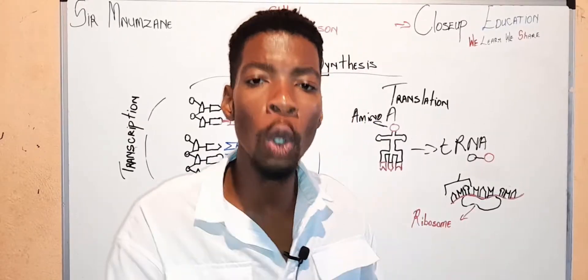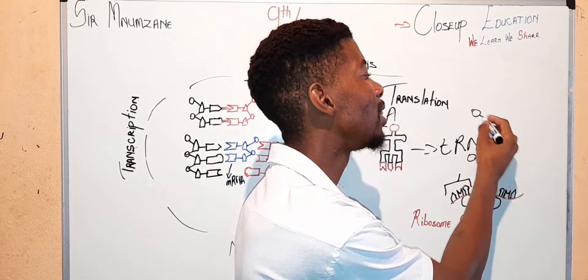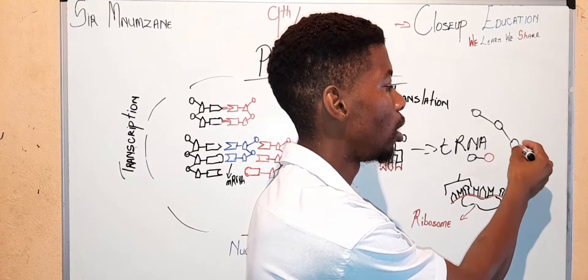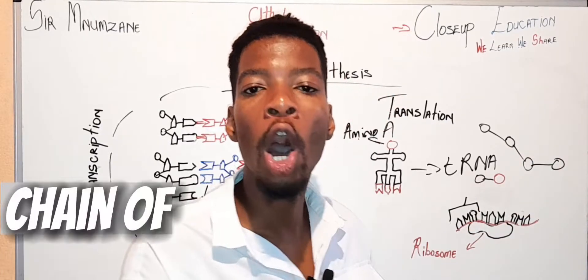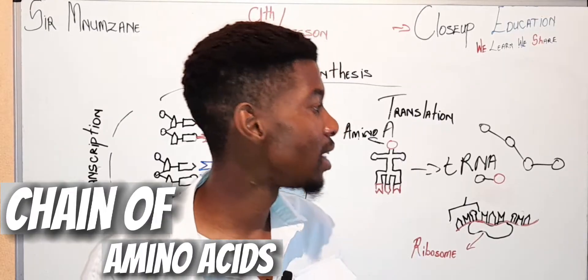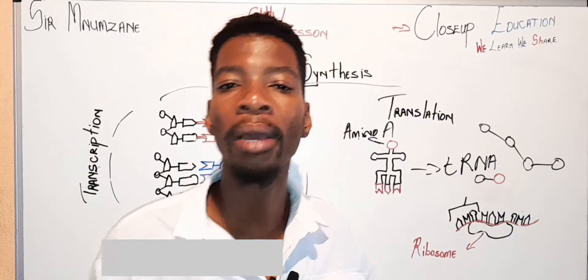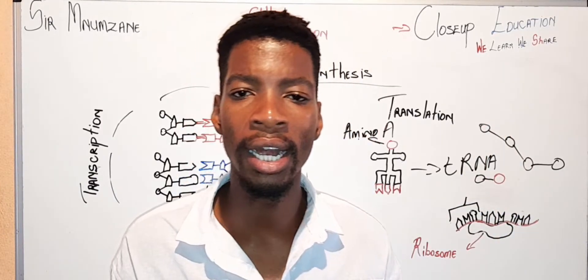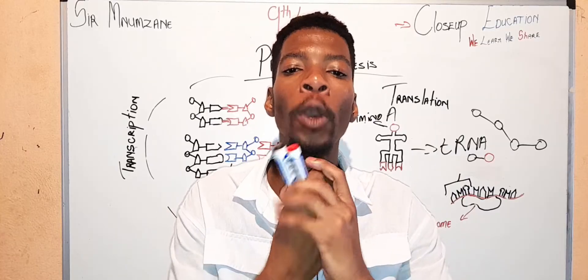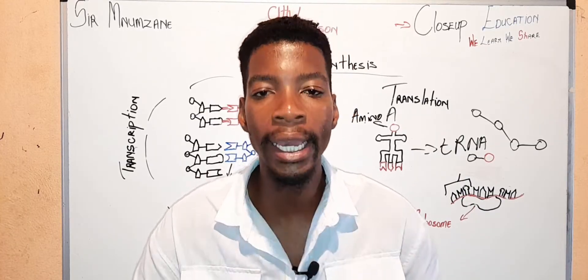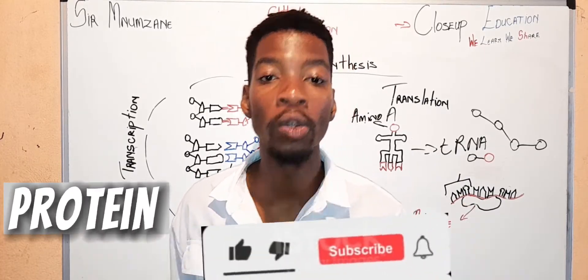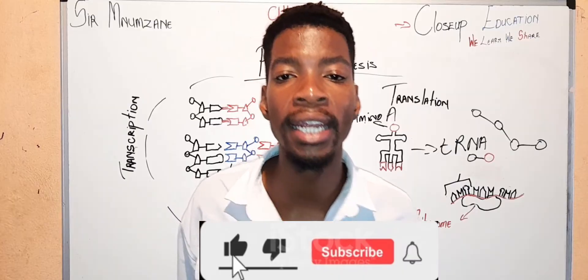Then it will look like this — a chain of amino acids joined by peptide bonds. That chain will fold to create a protein. And that is how a protein is created.